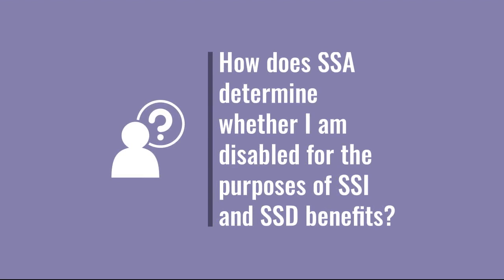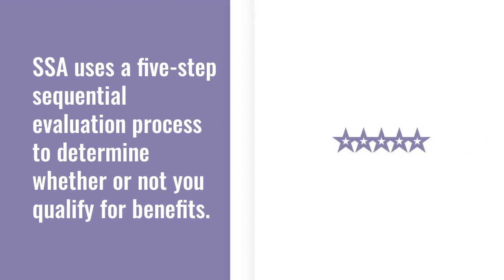How does the Social Security Administration determine whether I am disabled for the purposes of SSI and SSD benefits? The SSA uses a five-step process to determine whether or not you qualify for benefits. If, after completing a step, the SSA determines that you are not disabled, it does not continue on to the next step. The program only continues to the next step if the current step indicates you may be disabled. The one exception to this is at step 3.